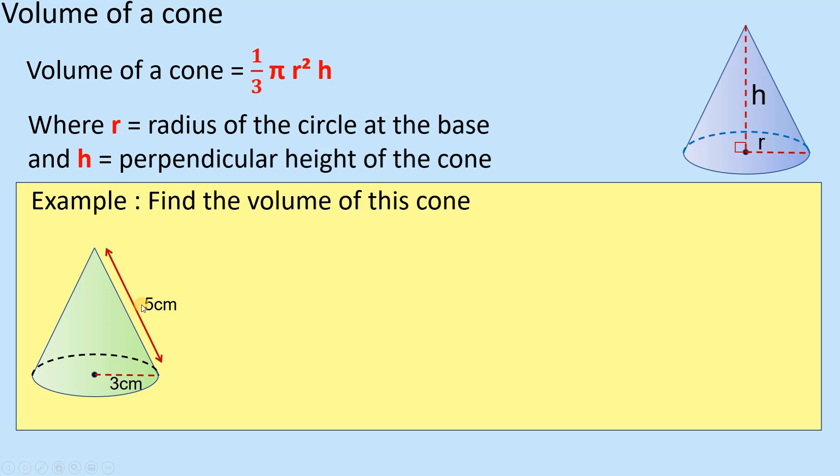Okay, so it's going to be 5² minus 3², square rooted, which will give me the perpendicular height, which is going to be 4. So that's the key first part of doing this.